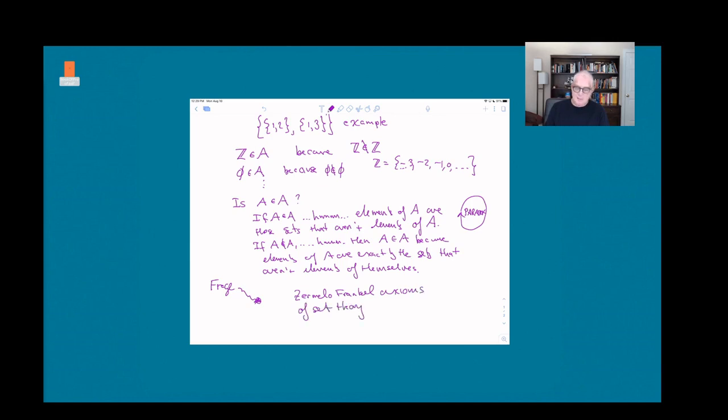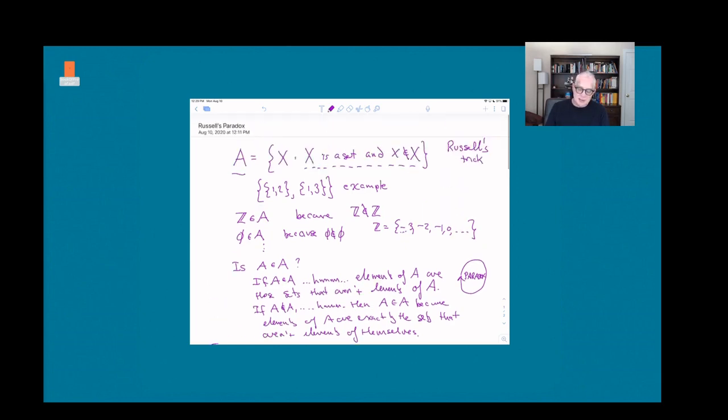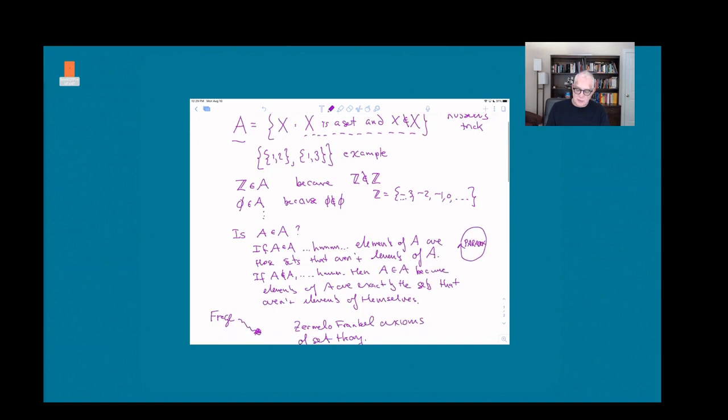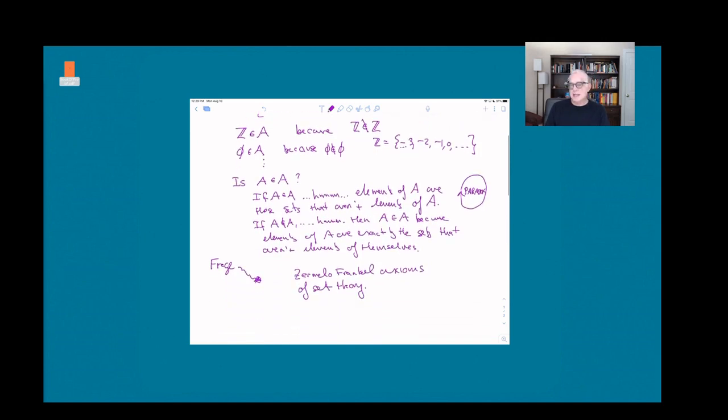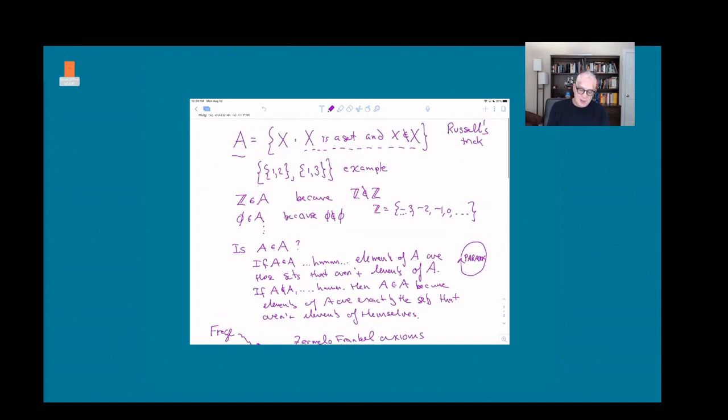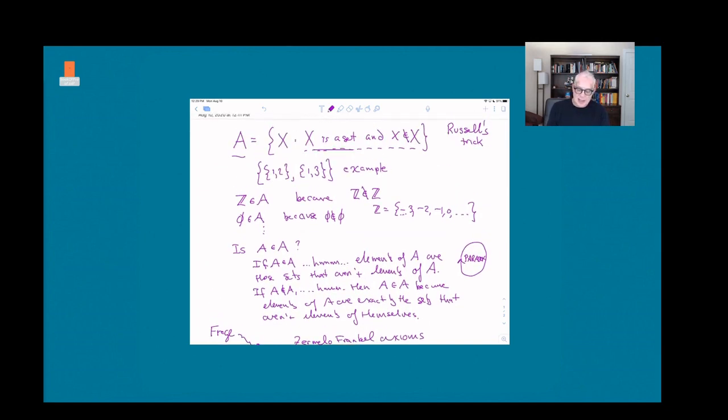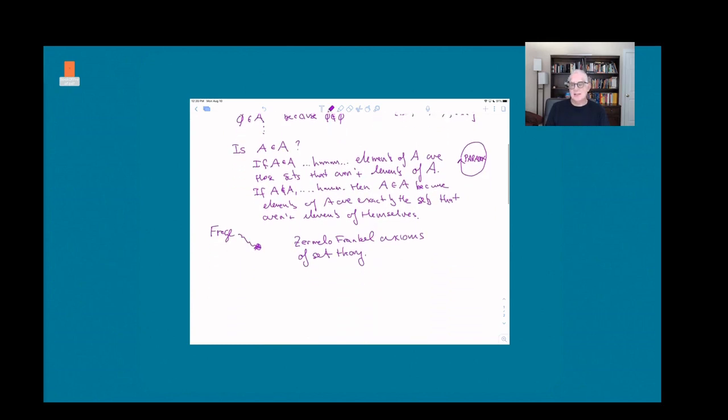These are something that you would study if you took a more advanced course in set theory. Basically it fixes the problem just by saying you're not allowed to do this. It puts restrictions on when sets can be elements of themselves and essentially makes it so that you have to be much more careful about what you put on the right-hand side of your set builder notation. You're just not allowed to do this, and if you're not allowed to do this, then you can't produce the paradox, and so you get a consistent system.